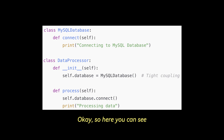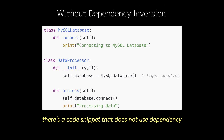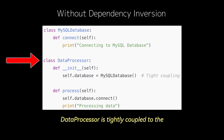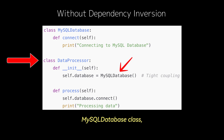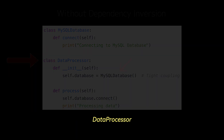So here you can see there's a code snippet that does not use dependency inversion. Data processor is tightly coupled to the MySQL database class, and any changes in the database requires modifying data processor.